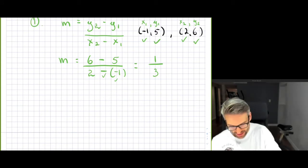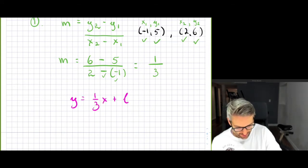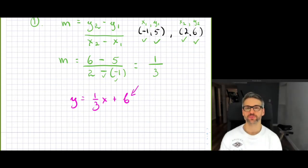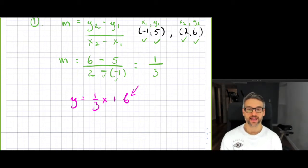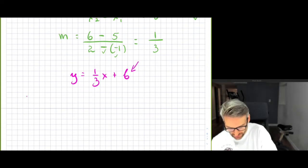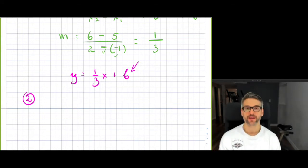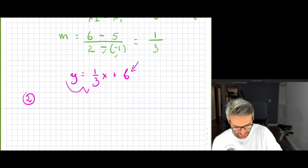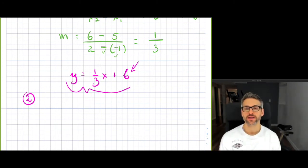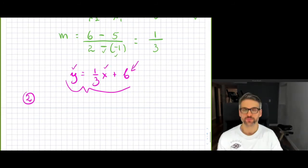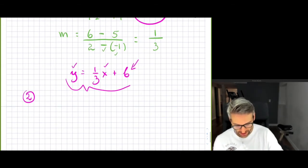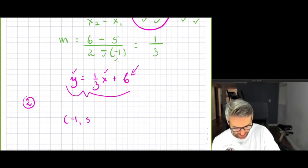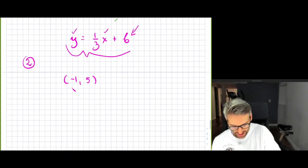Now that you have the slope, you have y is equal to 1 over 3 times x plus b. You still don't know your y-intercept b. Rather than graphing and guessing where the line crosses the y-axis, step number two is to pick a point and substitute it in for y and x. We can pick any point — for instance, the first point which is negative 1 and 5, where negative 1 is x and 5 is y.